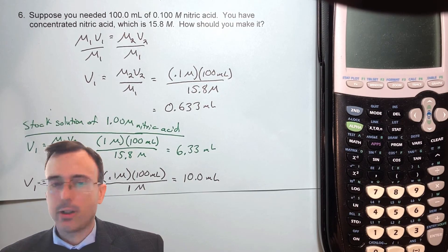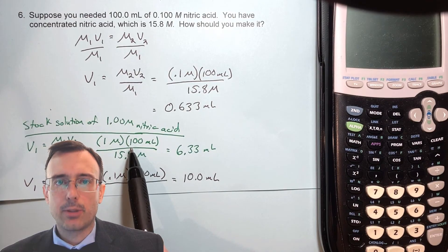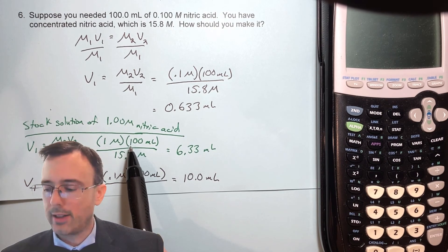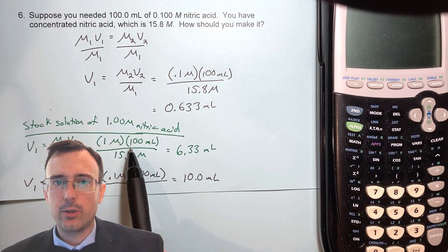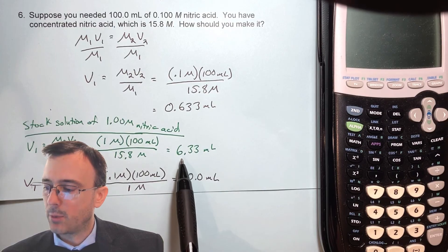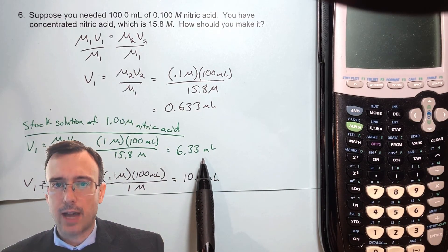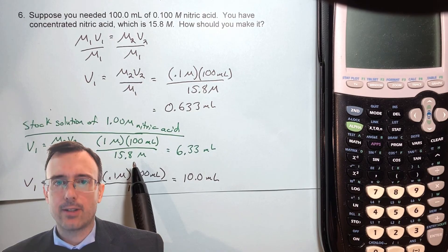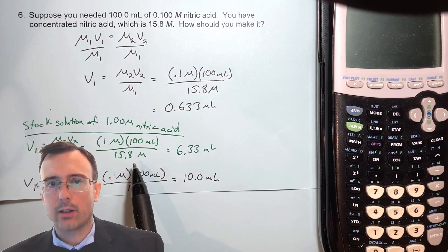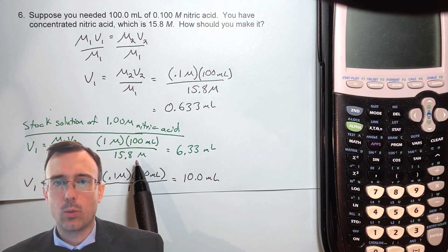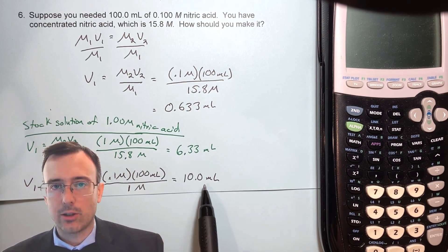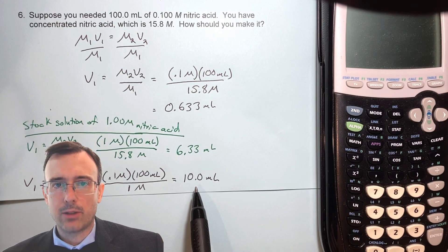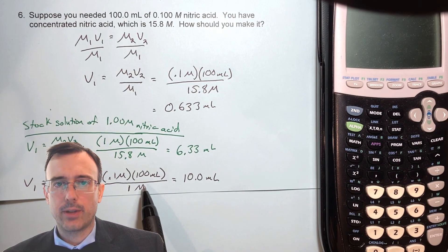In the lab, take a 100 milliliter volumetric flask and put about 80 milliliters of water into it — it doesn't matter exactly how much. Then use a glass graduated pipette to transfer 6.33 milliliters of concentrated nitric acid into the flask, adding the acid to the water. Cap it, invert it several times, and carefully add distilled water up to the mark to produce your 1 molar nitric acid stock solution.